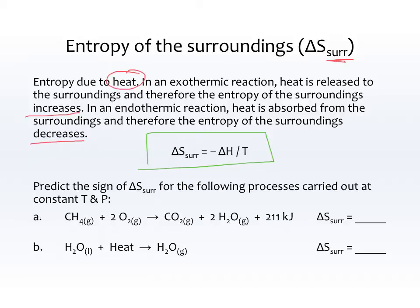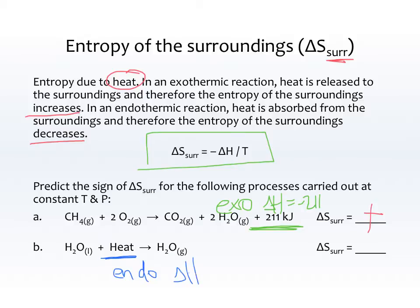This gives us the formula: S of the surroundings equals negative delta H over T, where T is temperature. For an exothermic reaction where delta H is negative, S of the surroundings is positive, because heat is being lost to the surroundings. For an endothermic reaction where heat is written as a reactant, the surroundings are losing entropy because they're giving up heat to the system.